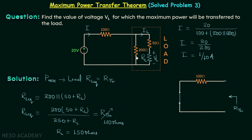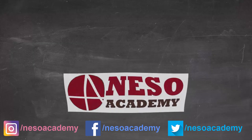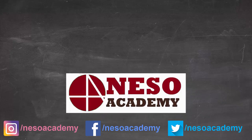Current I = 1/10 ampere divides equally at the node because both branches offer the same resistance, so I_L = 1/20 ampere. Therefore, VL = I_L × R_L = (1/20) × 150 = 7.5 volts. So the answer is: when VL equals 7.5 volts, maximum power will be transferred to the load.